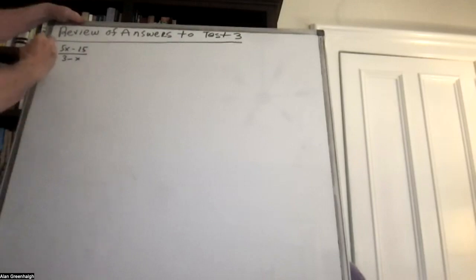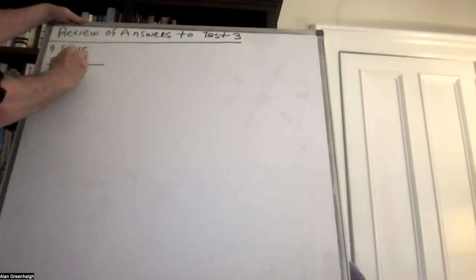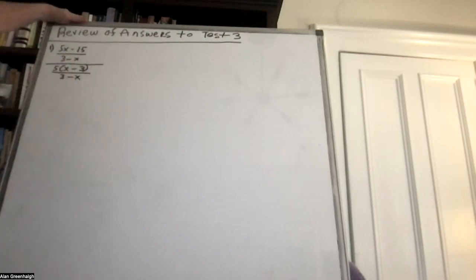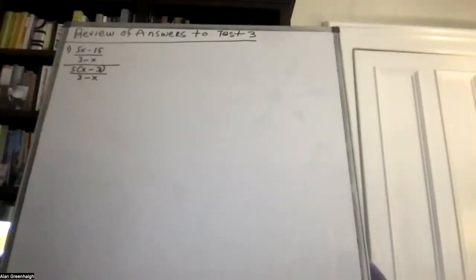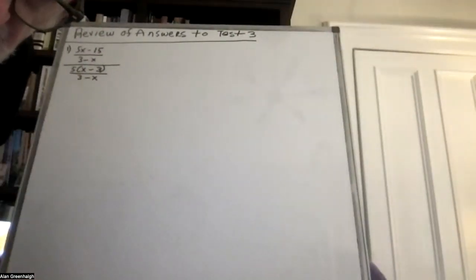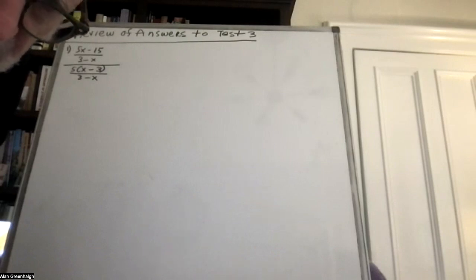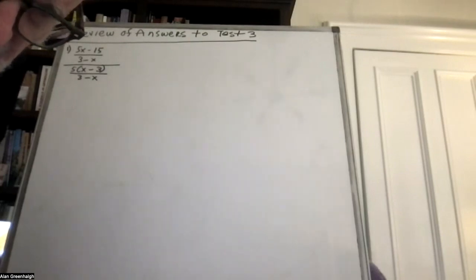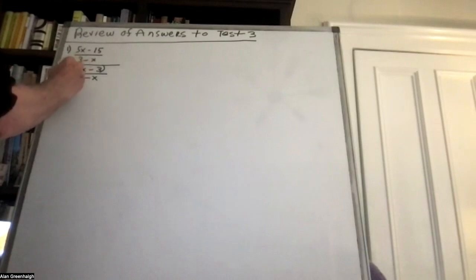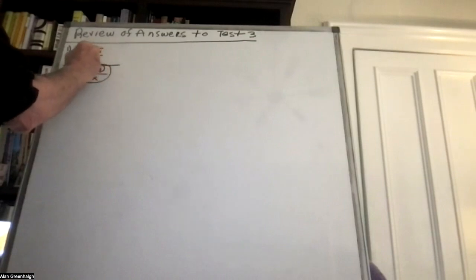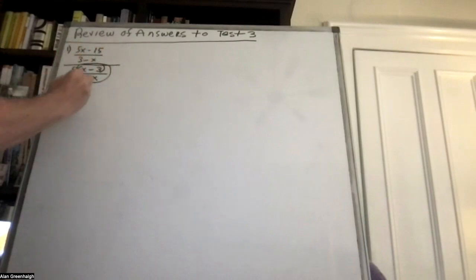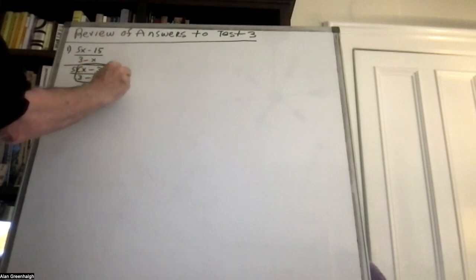The idea here was to factor the numerator, and it came out to x minus 3. This whole part right here was equal to negative 1. So this is 5 times negative 1, which was negative 5.